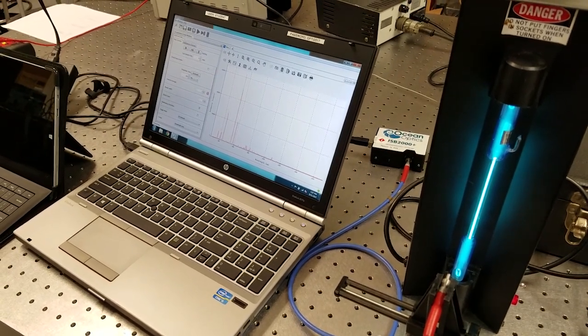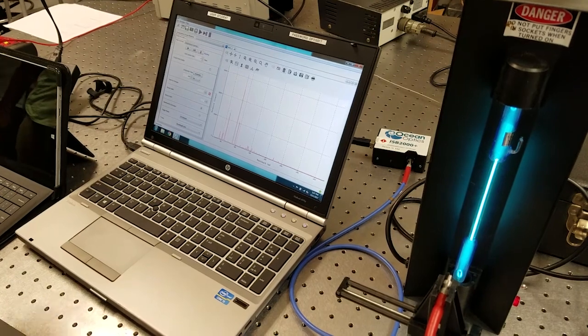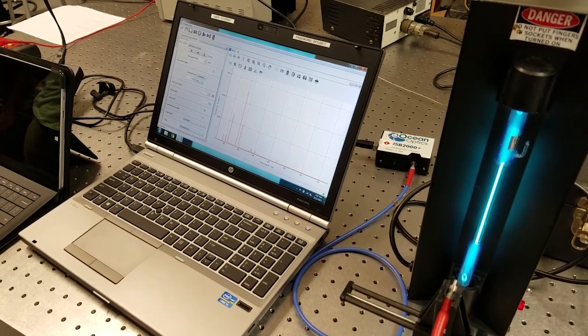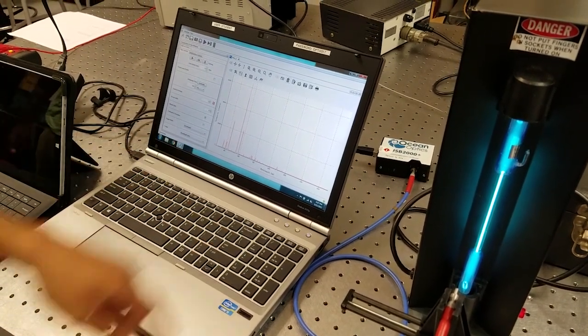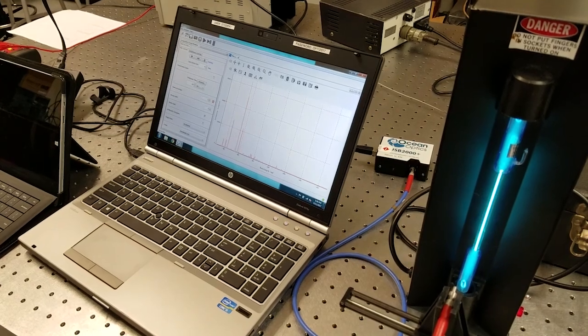And so those wavelengths of light corresponding to those energy drops correspond to the spectral lines that you see coming through this spectrometer.